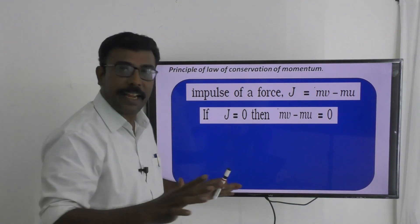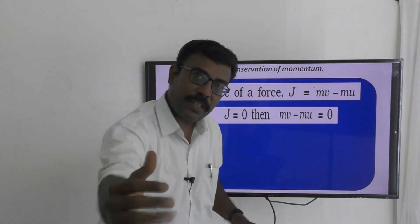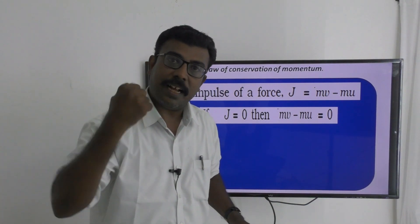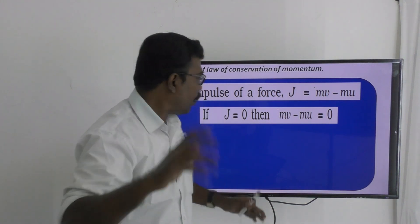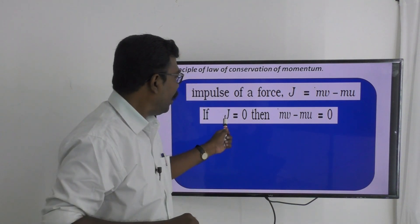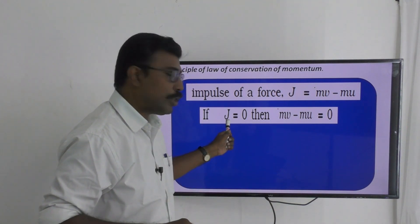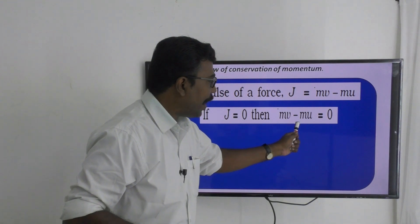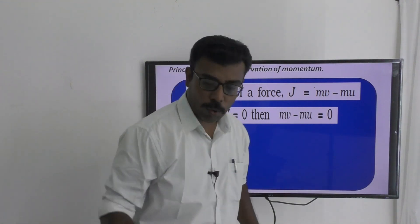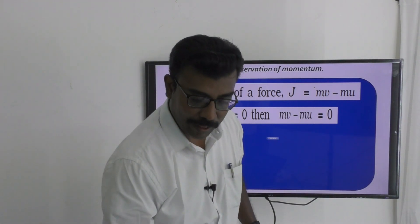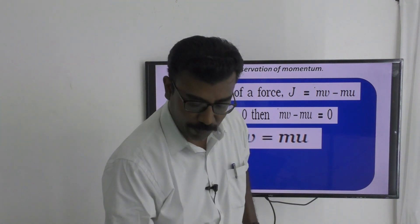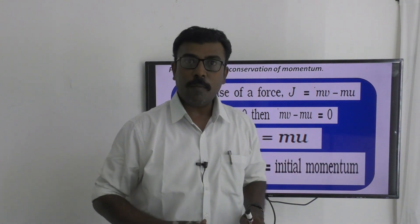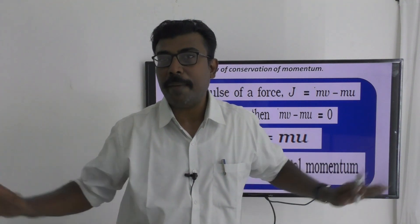If there is no impulsive force applied — help your force, apply nothing, impulsive force equals zero — then J equals zero, which equals zero. Then M times V equals M times U, meaning final momentum is equal to initial momentum.